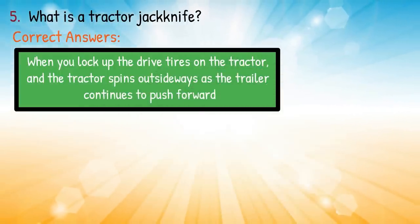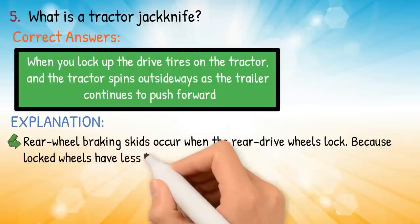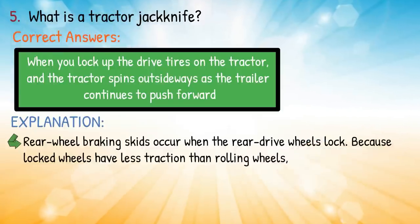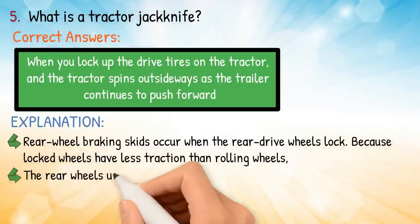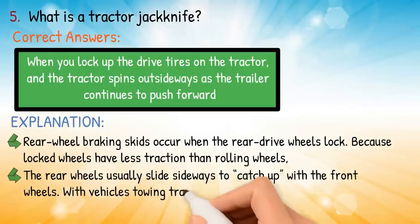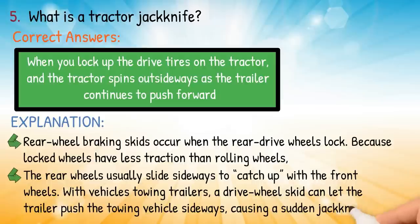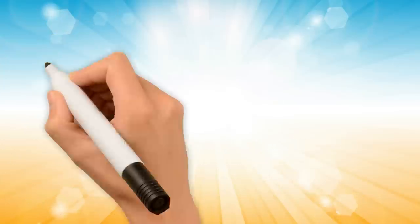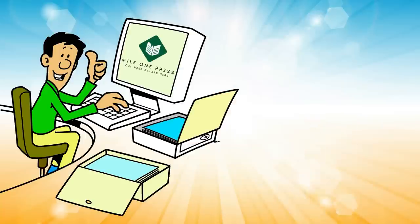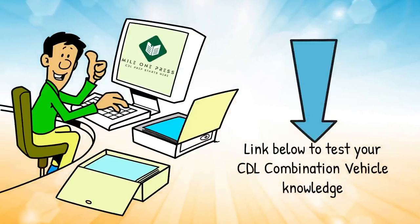Explanation: rear wheel braking skids occur when the rear drive wheels lock, because locked wheels have less traction than rolling wheels. The rear wheels usually slide sideways to catch up with the front wheels. With vehicles towing trailers, a drive wheel skid can let the trailer push the towing vehicle sideways, causing a sudden jackknife. Feel free to take a free sample test in the link below.